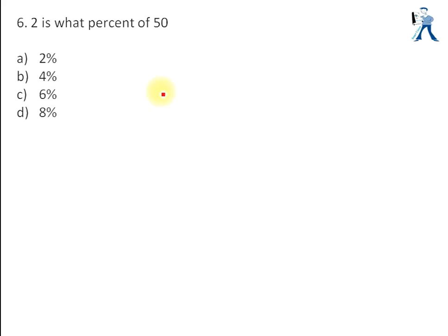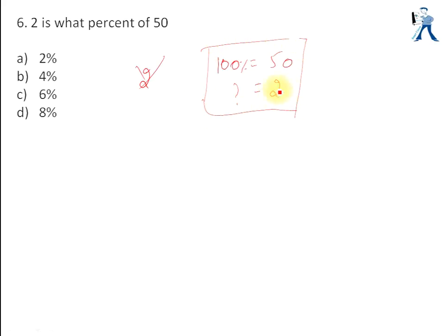Next question: 2 is what percent of 50? Using the cross multiplication method: 100% = 50, so the unknown percentage equals 100 × 2 / 50. Simplifying: 200/50 = 4%. The answer is 4%.